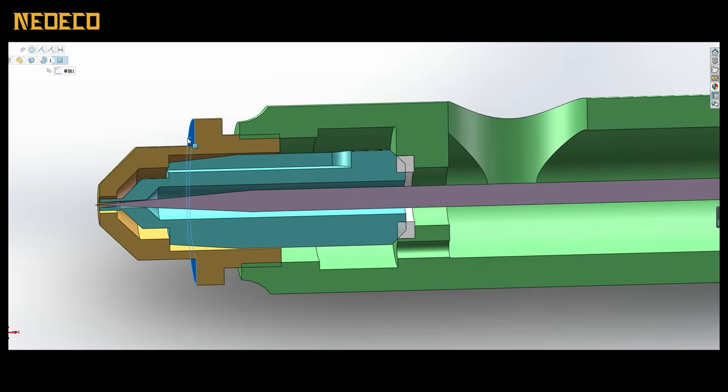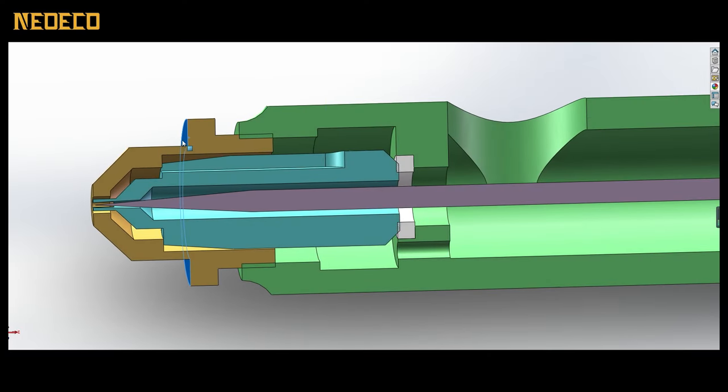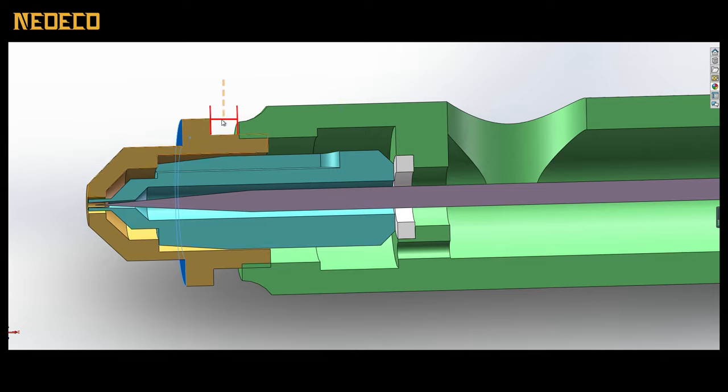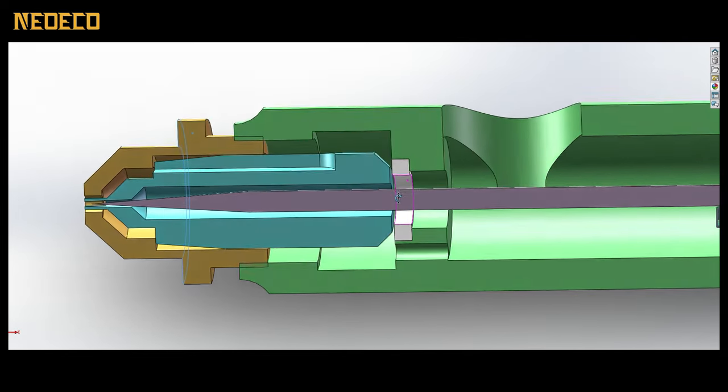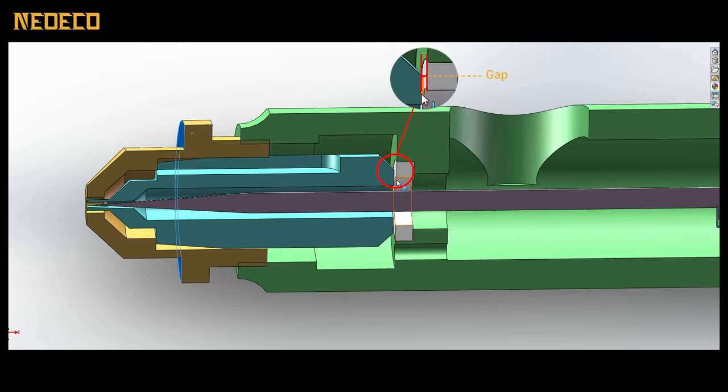One common culprit is the inadequate tightening of the air cap, leading to air leakage between the gap of the air cap and the airbrush body. Additionally, the connection area between the nozzle and the airbrush body can also be problematic.